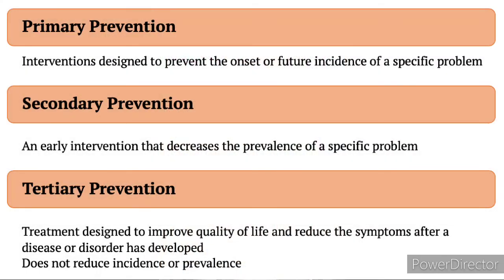Different diseases have different levels of prevention. It may be primary, secondary, or tertiary prevention. Primary prevention's purpose is to forestall the onset of illness or injury during the pre-pathogenesis period, or before the disease process begins.